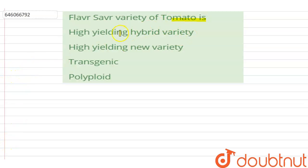The options are: high yielding hybrid variety, high yielding new variety, transgenic, polyploid. So the correct option is transgenic, as Flavr Savr is a genetically modified variety of tomato.